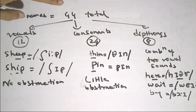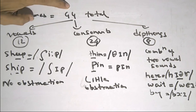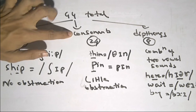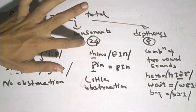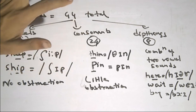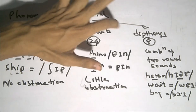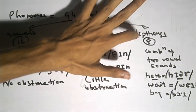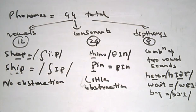Phonemes are a total of 44 sounds, and we can sort them into three categories. These are: vowels, which are 12 sounds; next, consonants, which are 24 sounds in totality; and the third and final one is diphthongs, which are 8 sounds.